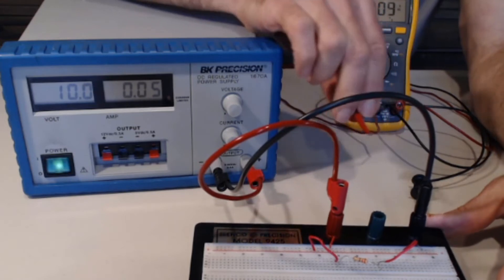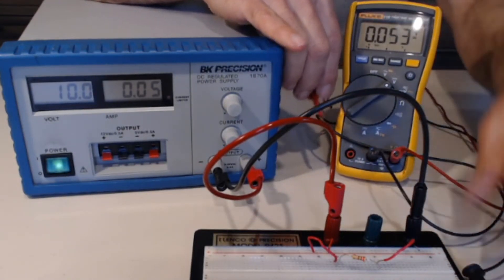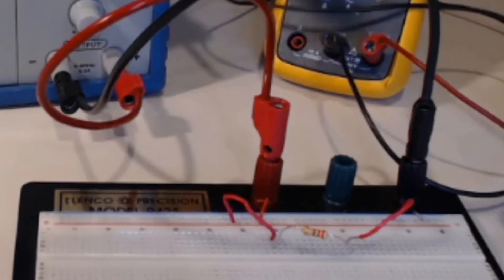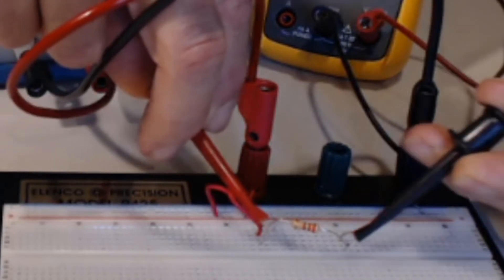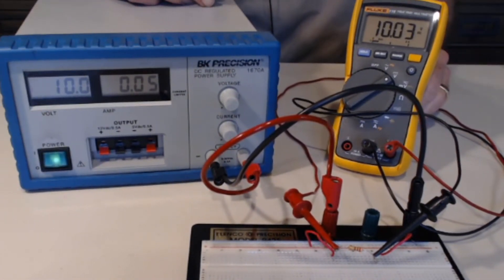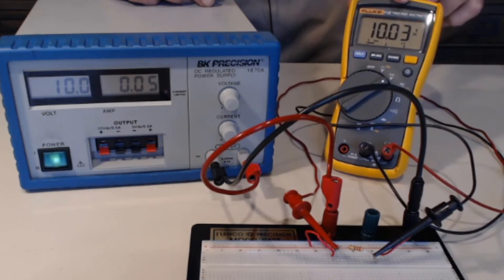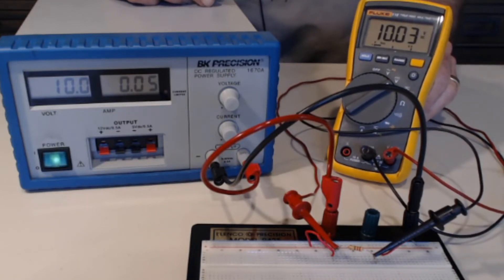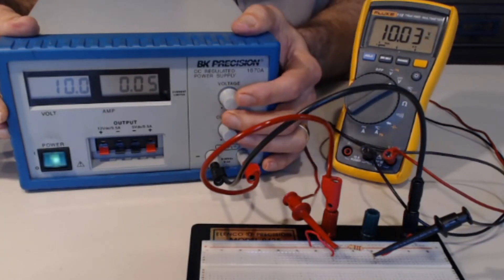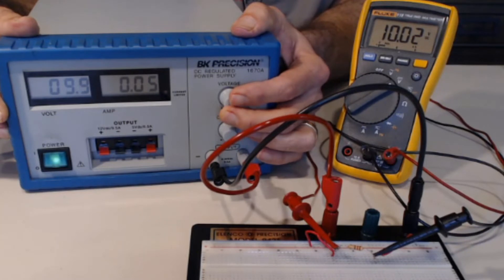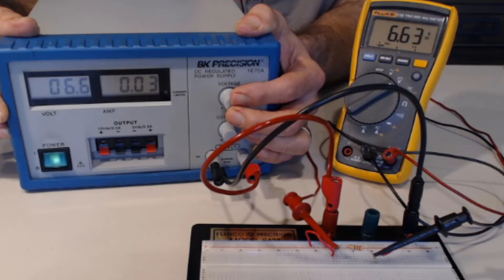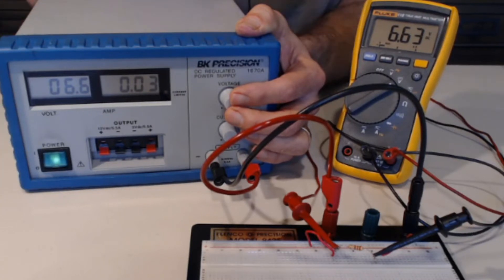So let's hook up my multimeter set to DC voltage. And it also tells me that I'm getting 10.03 volts across that resistor. Now if I change my voltage, first I'll go down a little bit, 6.6, and my multimeter agrees.